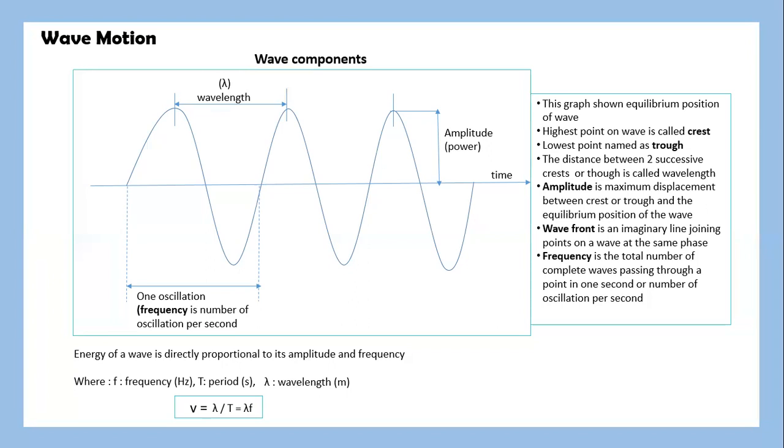The wave front is an imaginary line joining points on the wave at the same phase. Frequency is the total number of complete waves passing through a point in one second or number of oscillations per second.